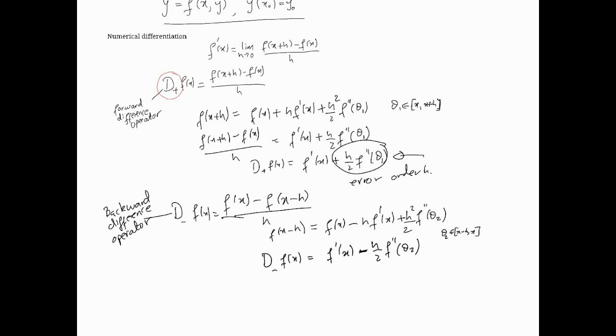Here we can see that the error is order h also. Don't worry too much about the negative sign—that's not really important. What's important is that the error is again order h. This is the forward difference and backward difference operators used in numerical differentiation.